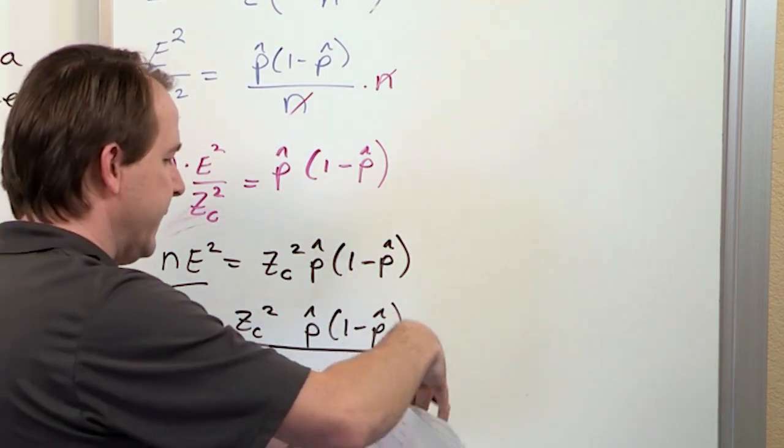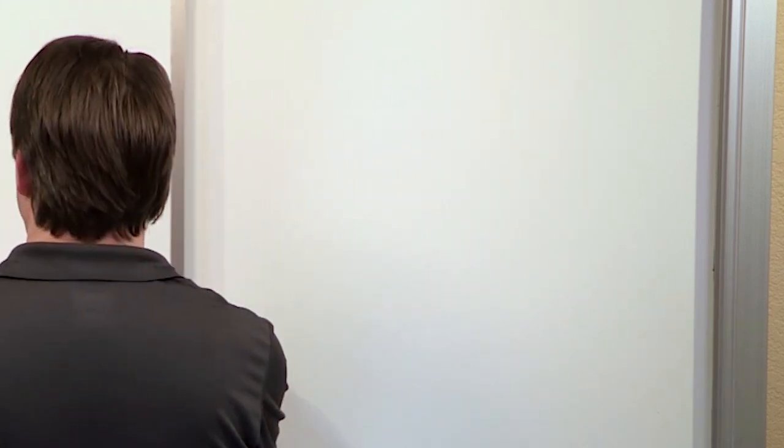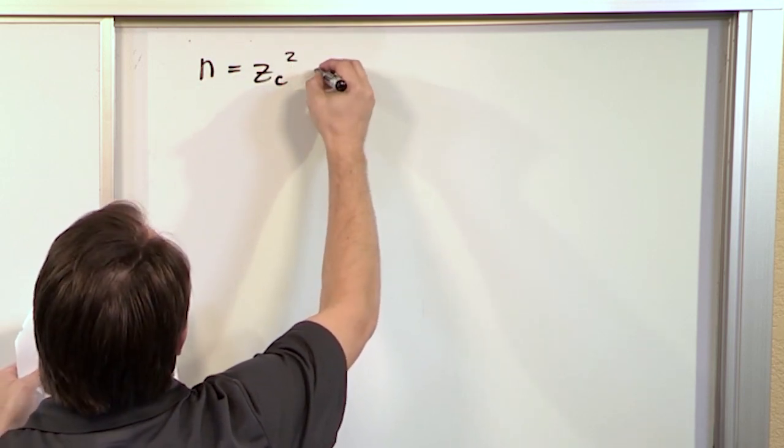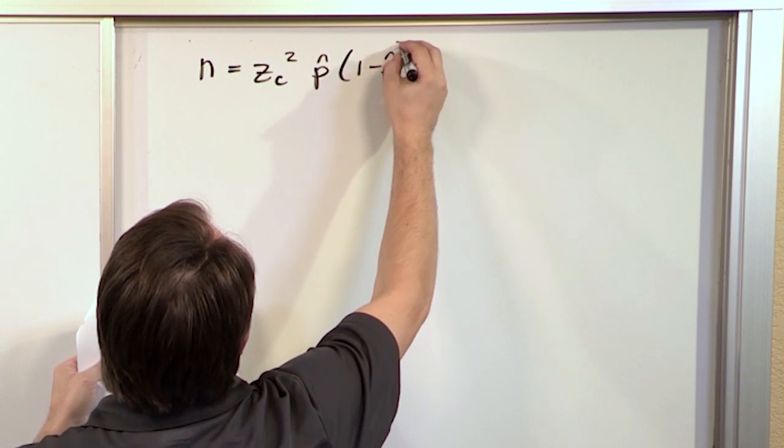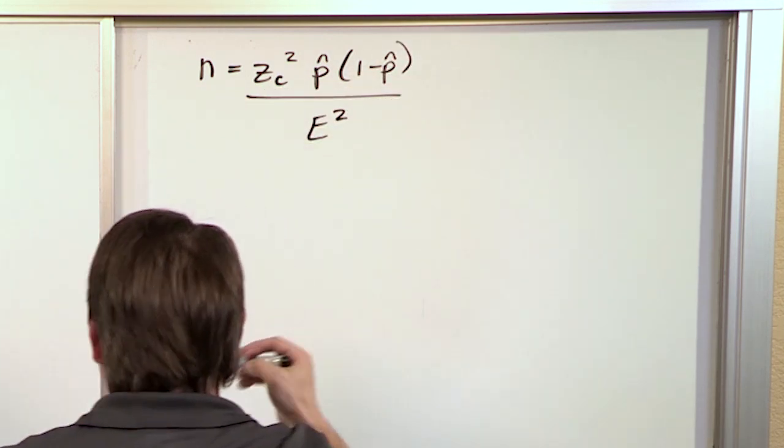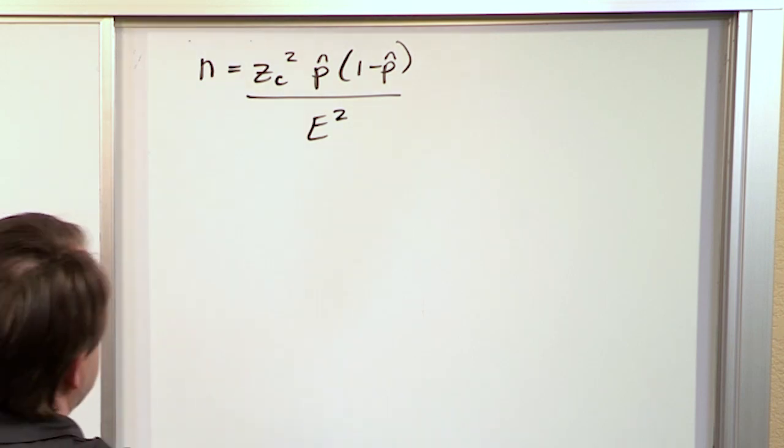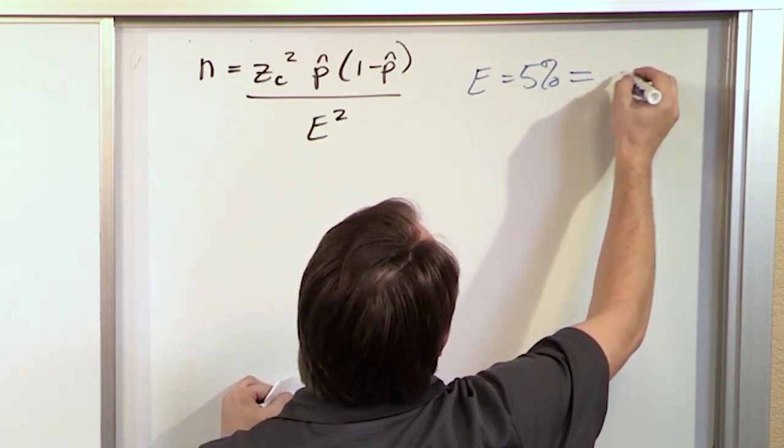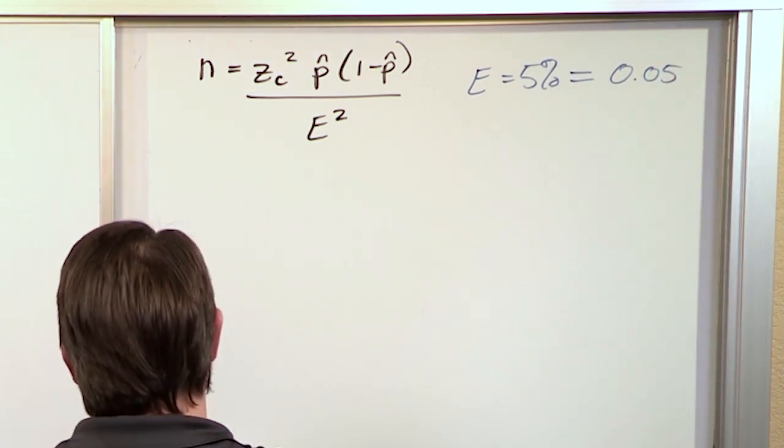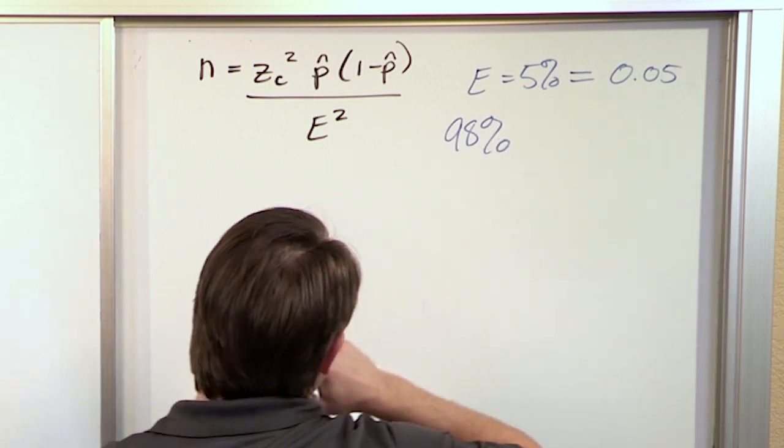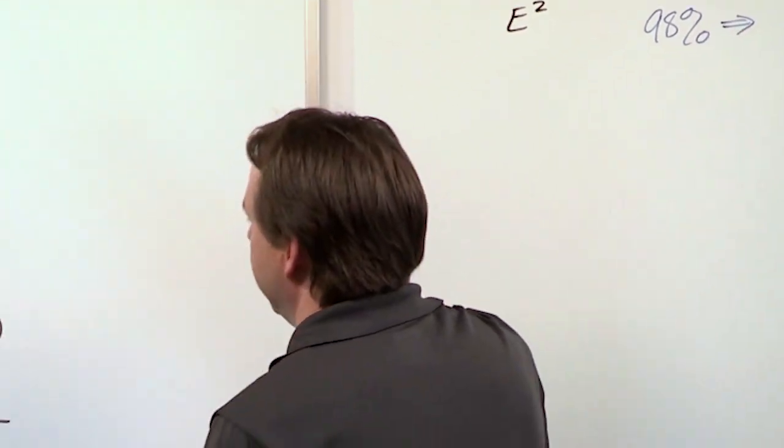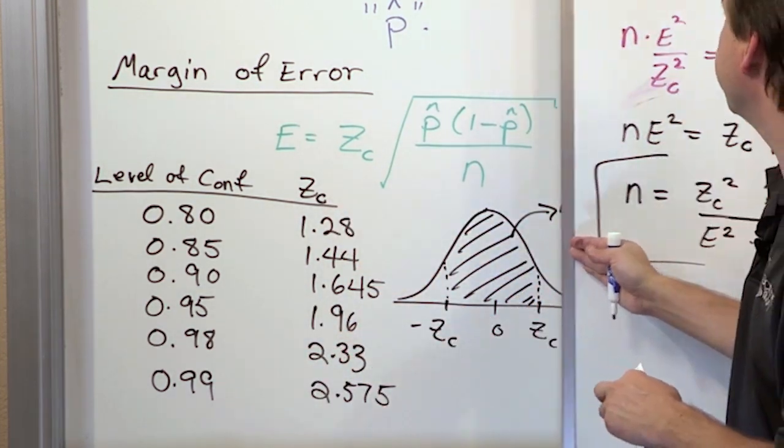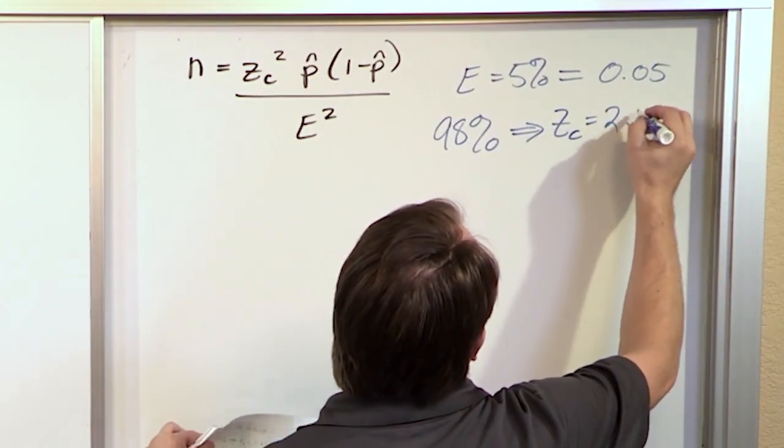Let me rewrite it. n equals z_c² p̂(1-p̂)/E². Now from the problem statement, we know that the margin of error we're comfortable with is 5%, which is 0.05. We know that we want a 98% confidence interval, and that corresponds to a critical value z of 2.33.